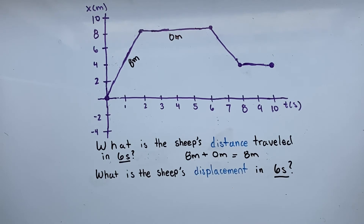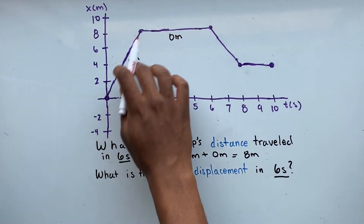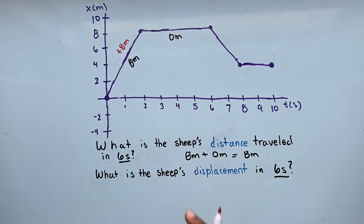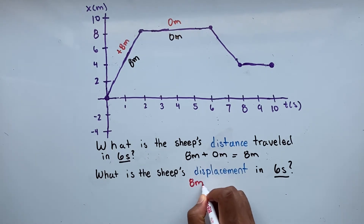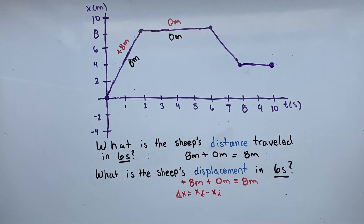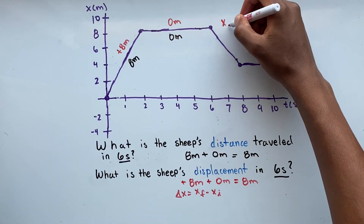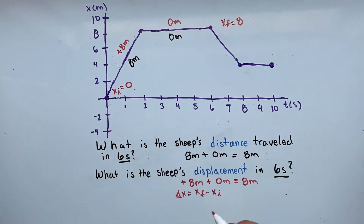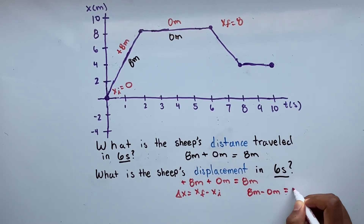Now let's solve for displacement. From 0 to 2 seconds, our sheep traveled from 0 to 8, so that's positive 8 meters for displacement. From 2 to 6 seconds, our sheep remained at 8, so displacement is 0 meters. Adding those: positive 8 plus 0 gives us 8 meters for displacement in 6 seconds. Using the formula, delta x equals final position minus initial position: 8 minus 0 equals 8 meters for our displacement.